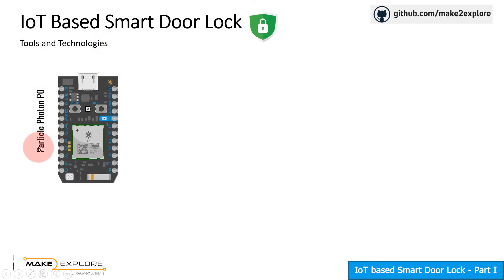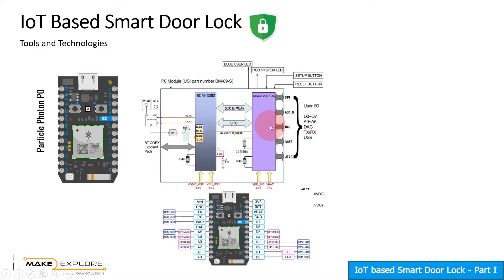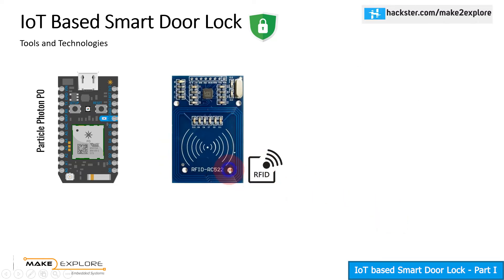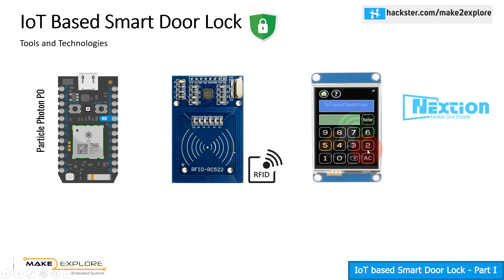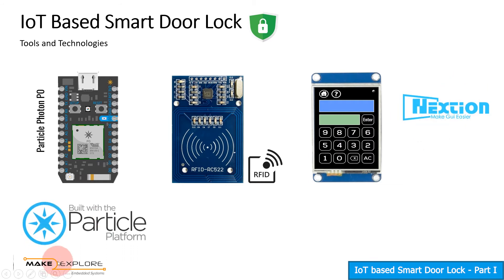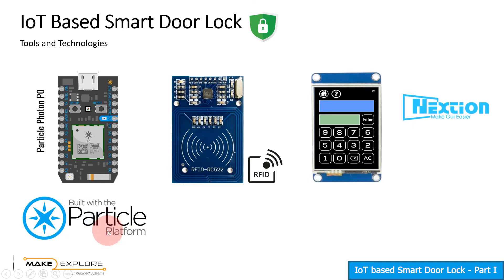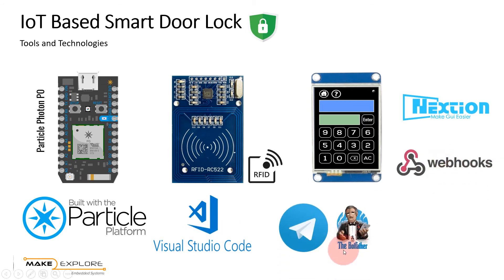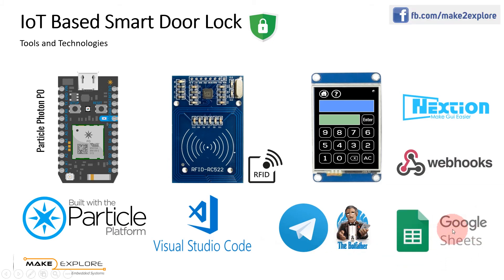We will use the Particle Photon P0 IoT Development Board. It was introduced a few years back, but its compact size and rich features make it a classic IoT development hardware platform. Then we will use the RC522 RFID Reader module and NextGen HMI Touchscreen Display. For that we will use NextGen Editor IDE to create the GUI on the display. Particle Photon can be programmed using the Particle Workbench extension installed in Visual Studio Code Editor. We will also see how to use Particle Cloud webhook integration setup to create OTP using Telegram bots, and to record data into Google Sheets.